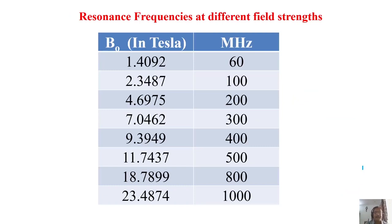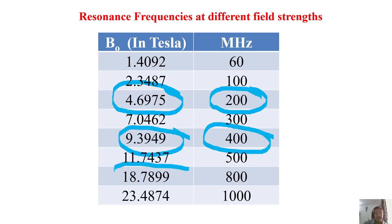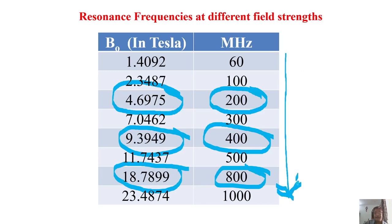This table summarizes what happens to the resonating frequency as the magnetic field increases. At approximately 4.7 tesla, the resonating frequency is 200 MHz. At 9.4 tesla it doubles to 400 MHz (obtained by doubling the magnetic field). At 18.8 tesla it goes to 800 MHz — the resonating frequency changes linearly. B naught in NMR is always expressed in tesla and the resonating frequency is always expressed in megahertz.